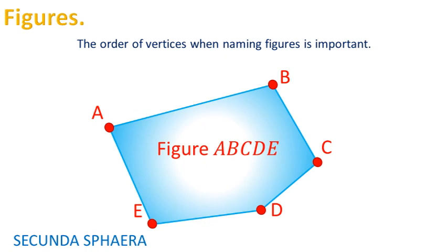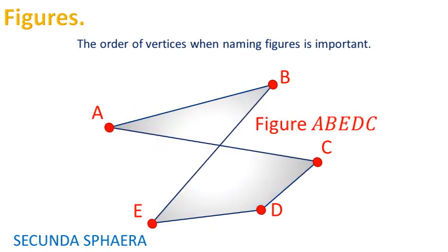The order of vertices when naming figures is important. If the order of the vertices is changed, a different figure could be constructed. Following, there are some examples of different figures that can be constructed using the same points as vertices.